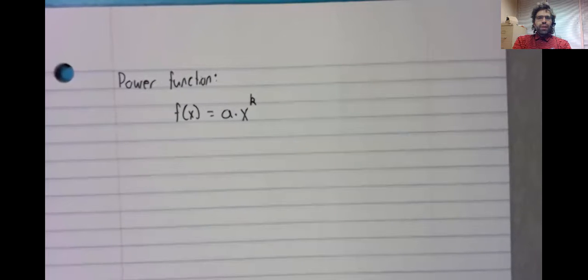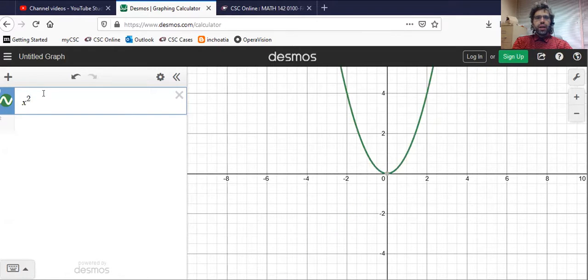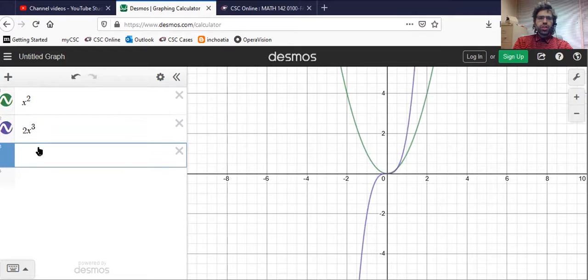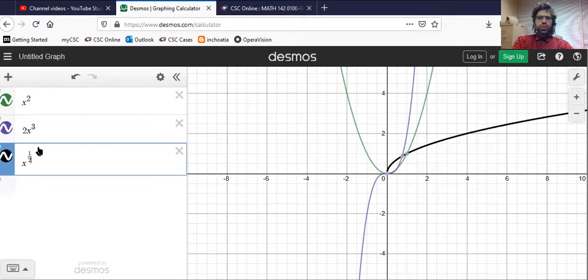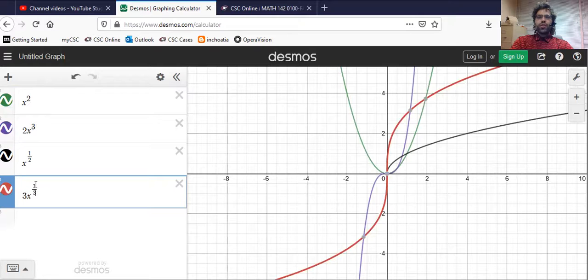In general, power functions are really too complicated to say much about. x squared is a power function. 2x cubed is a power function. x to the one half is a power function. 3x to the one third is a power function.